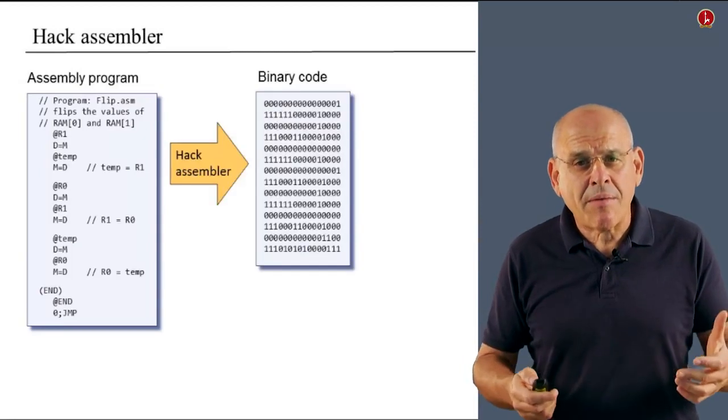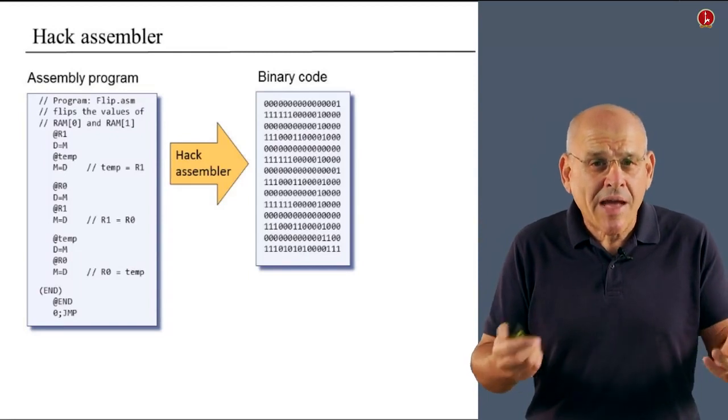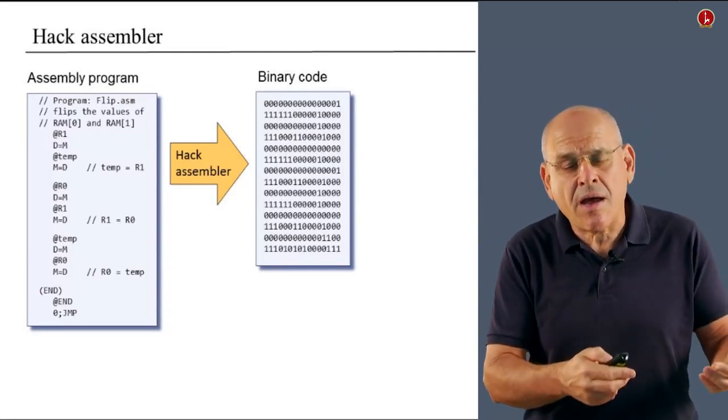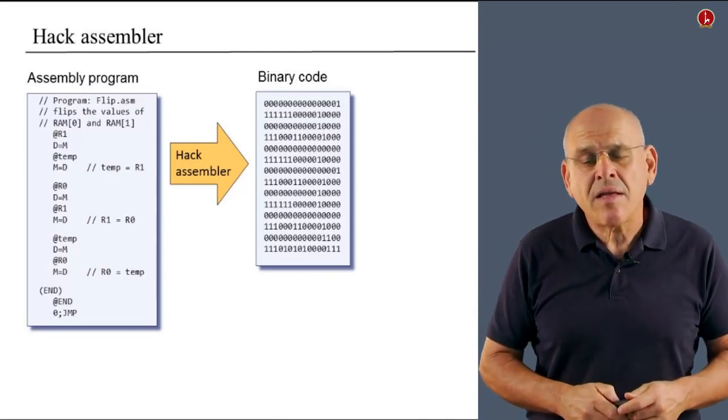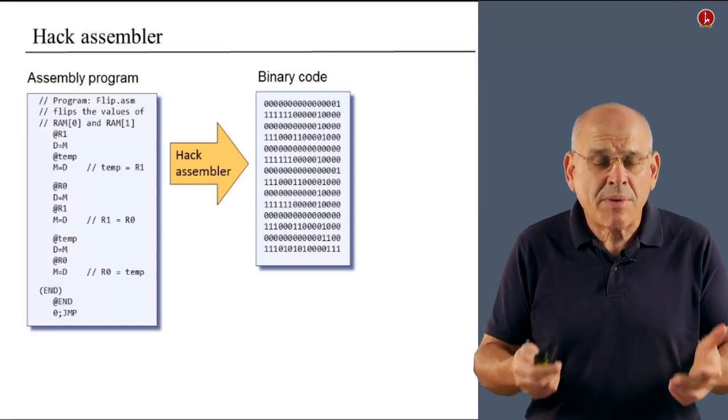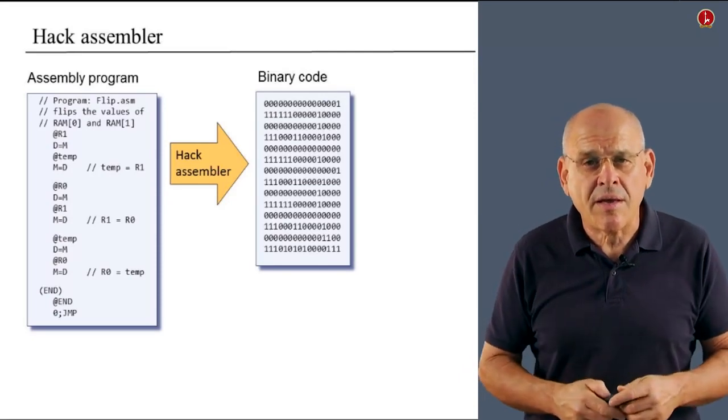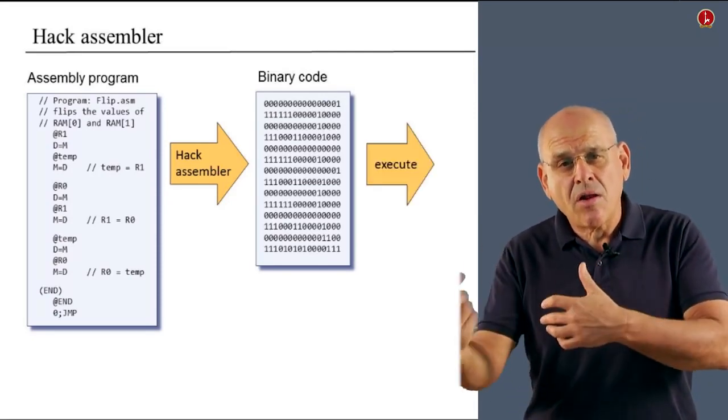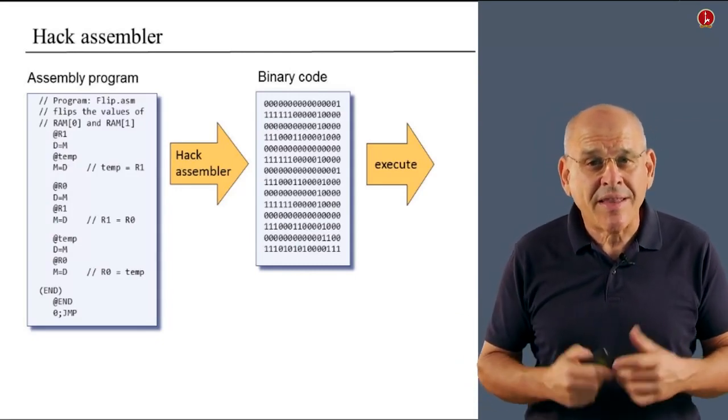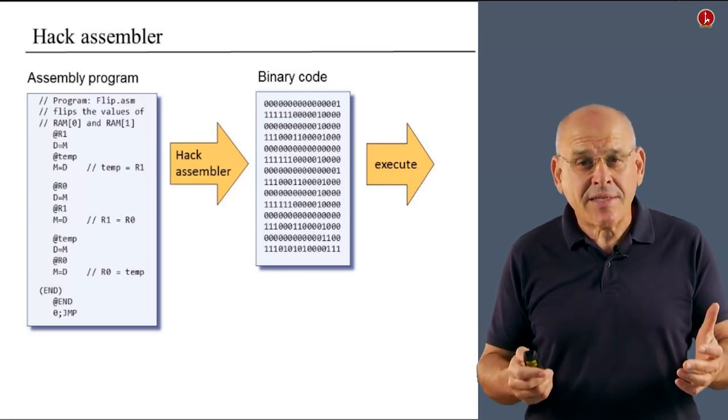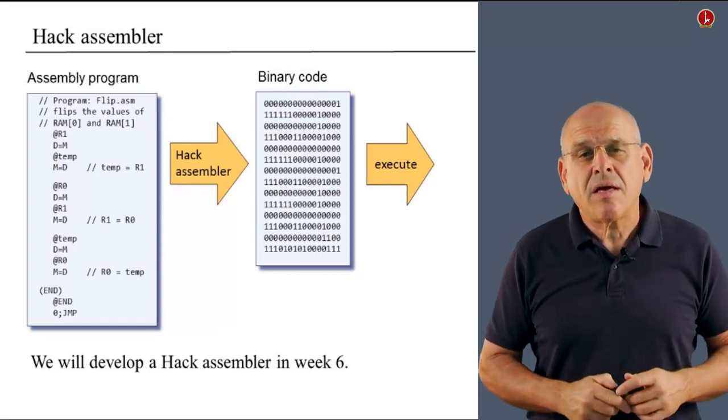And this is something which is typically done by a program called assembler. What we see here is this program in action. It takes a file which is written in symbolic language and translates it into another file written also in symbols, but these symbols are only zeros and ones. Having produced the target code in binary, we can take this file, load it into the Hack computer, and finally execute the intended program. So this is the Hack assembler, and in week six of this course, we will actually build such an assembler.